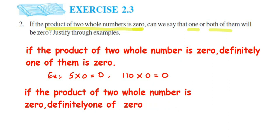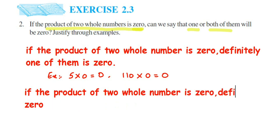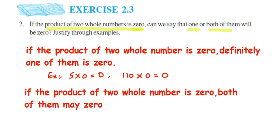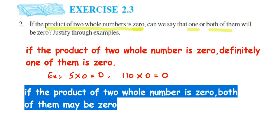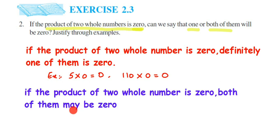There could be the first case where one number is zero, and in the second case we can say that both of them may be zero. We cannot definitely say both numbers are zero, because if one number is zero the product is zero, and if both numbers are zero the product is also zero. That is why I wrote 'maybe.' As an example: zero multiplied by zero equals zero.